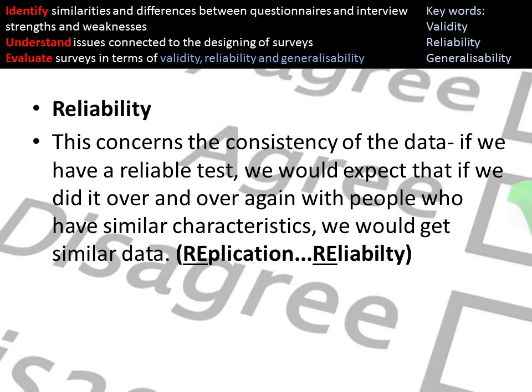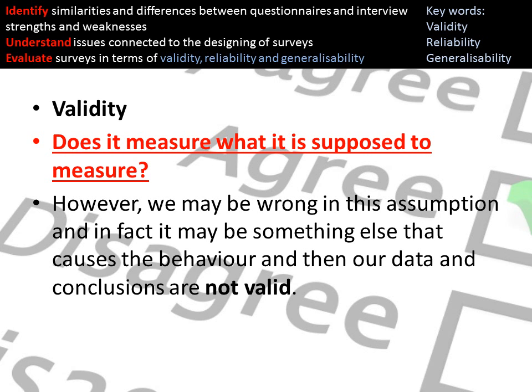Reliability — which we've talked about a lot already — is the idea that if we replicate something, would we expect to get the same results? If we would, then we say something is reliable. Validity refers to whether something measures what it is supposed to measure.